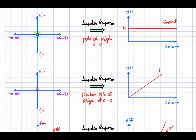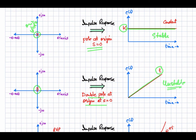If we have one pole at the origin, the impulse response is a constant k — a bounded response — so the system is stable. However, if we have a repeated pole at the origin, a double pole, the response becomes t, which increases with time and is not finite. That is an unstable system.